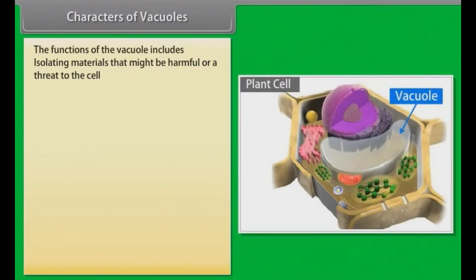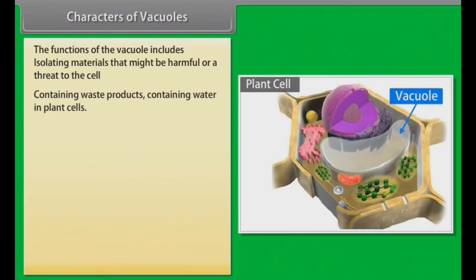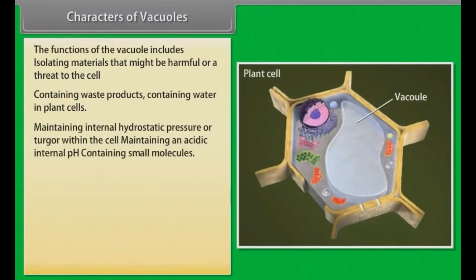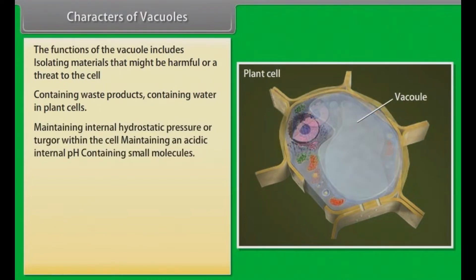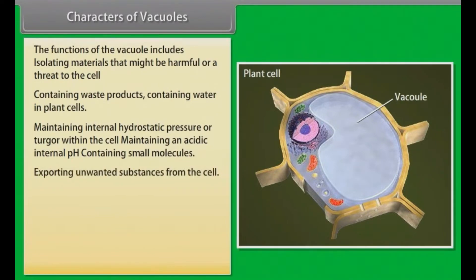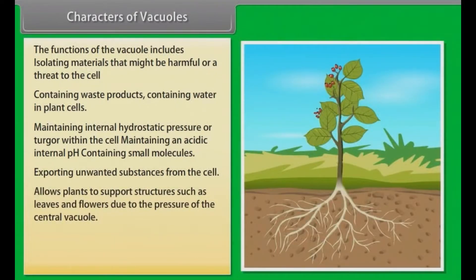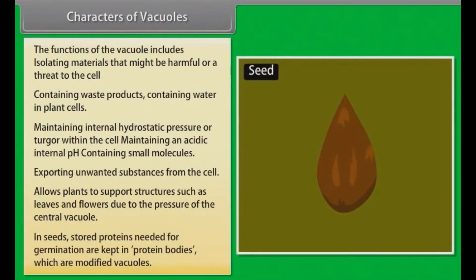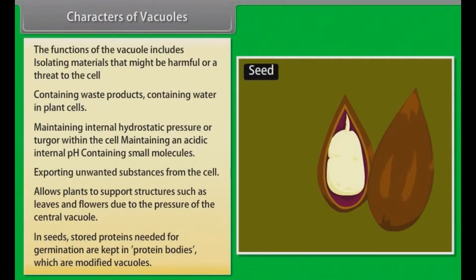The functions of the vacuole include isolating materials that might be harmful or a threat to the cell, containing waste products, containing water in plant cells, maintaining internal hydrostatic pressure or turgor within the cell, maintaining an acidic internal pH, containing small molecules, exporting unwanted substances from the cell, and allowing plants to support structures such as leaves and flowers due to the pressure of the central vacuole. In seeds, stored proteins needed for germination are kept in protein bodies, which are modified vacuoles.